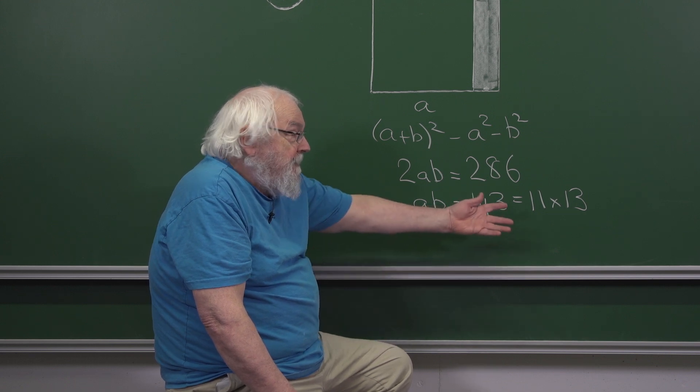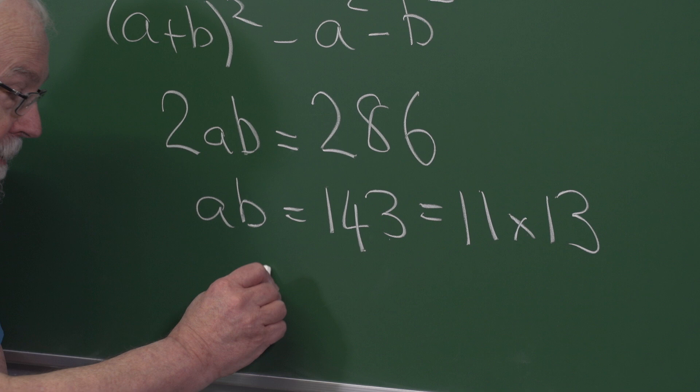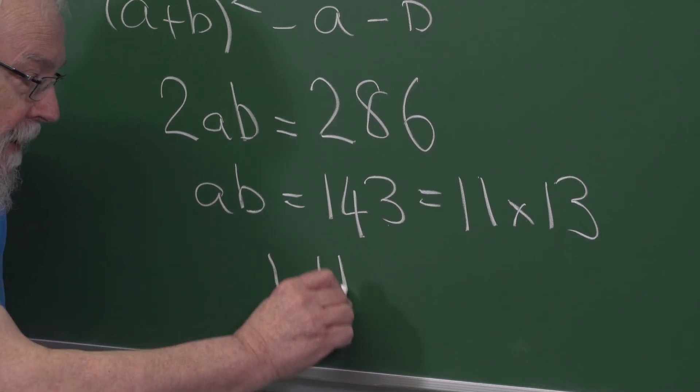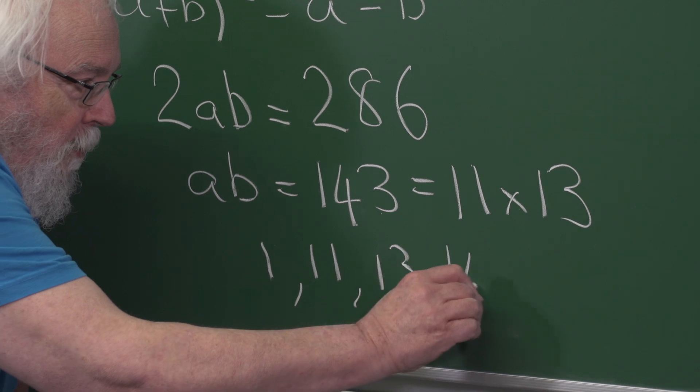This doesn't have so many divisors. So the divisors are 1, 11, 13, and 143.